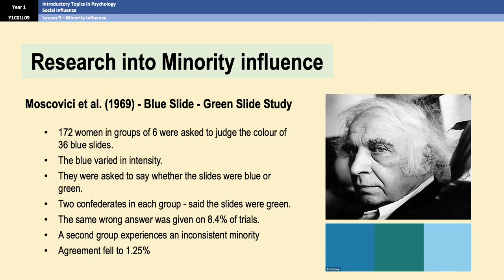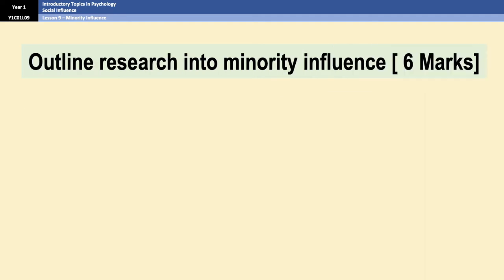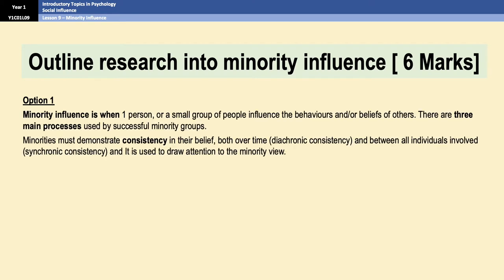The beauty of this piece of research is that you can use it in an outline as a piece of research, or you could use it in an evaluation point as research support. Before we move on to the evaluation points, I want to show you how all this comes together in a six mark outline. I've got two different versions so you can see there are different ways to do this. The question is a straightforward six marker: outline research into minority influence. Option one has a little introduction, and then the outline is all theory — because when you're asked to outline research, you don't have to have a study in there. Research just means theory or study; it doesn't have to be both.